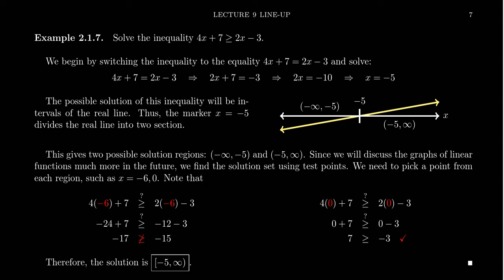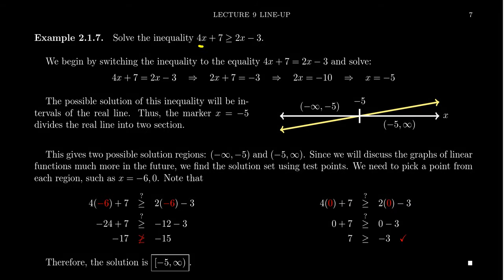In this example, I want to solve a linear inequality. We have a linear expression, 4x plus 7, and another linear expression, 2x minus 3. We want to solve this relationship when the left-hand side is greater than or equal to the right-hand side.